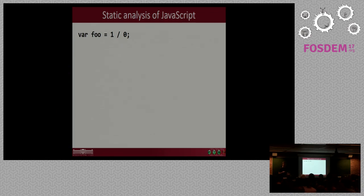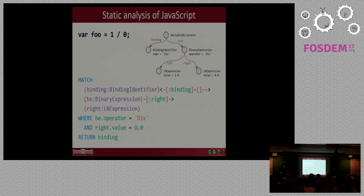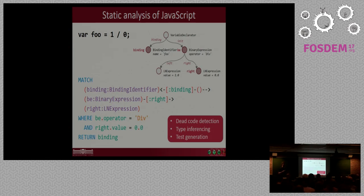Another use case is the static analysis of JavaScript applications. This is a very simple example. You have a division by zero in your source code and you can detect this by building a syntax tree and doing pattern matching on the syntax tree. So basically this Cypher query allows you to catch division by zeros in your source code. Now obviously this is a very simple example. So in practice you have much more power when you have your whole repository represented as a graph. You can do stuff like dead code detection in your whole repository. You can do type inferencing if you don't use TypeScript or any other languages that allow static typing for JavaScript. And then you can use these for generating unit tests for your code.